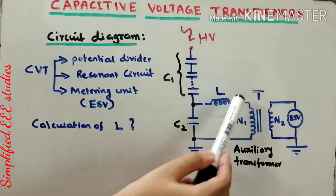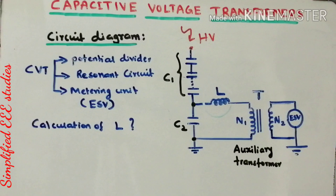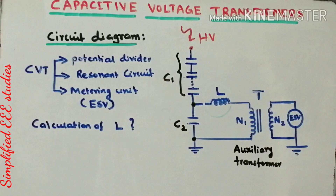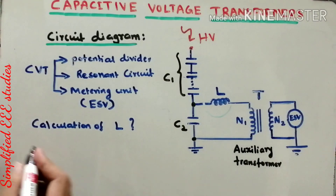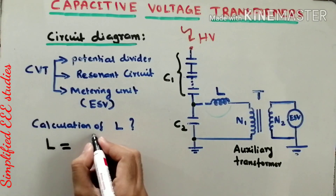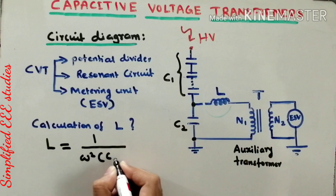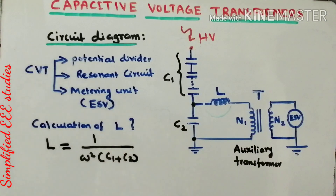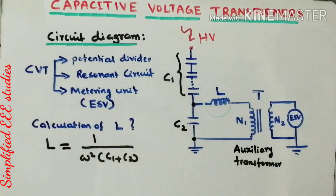To calculate the value of the inductor — which serves two functions: compensation for the transformer and avoiding inverted output — you can use the formula: L = 1 / [ω² × (C1 + C2)], expressed in Henry. Here ω is the angular frequency in radians per second, and C1 and C2 are the high voltage and low voltage capacitance values. After calculation, the inductor value can be adjustable and tunable to maintain the suitable value.